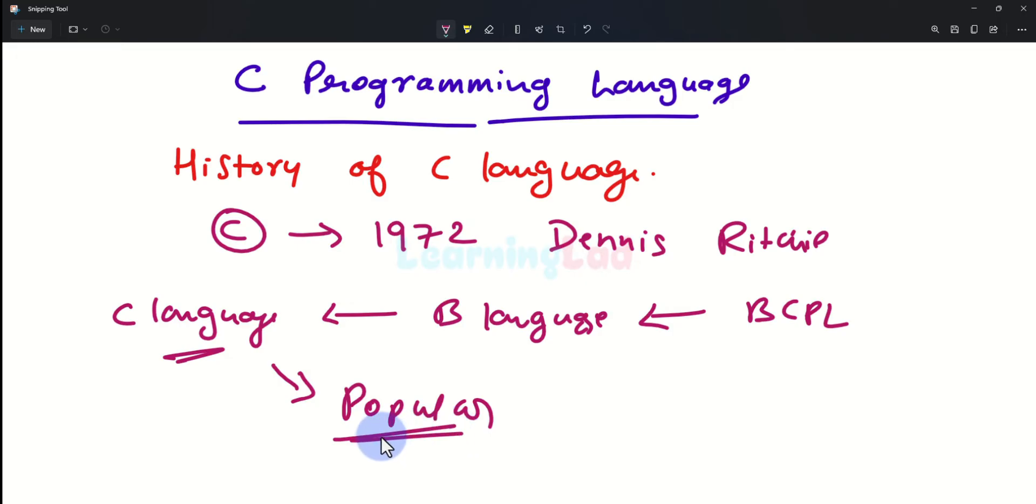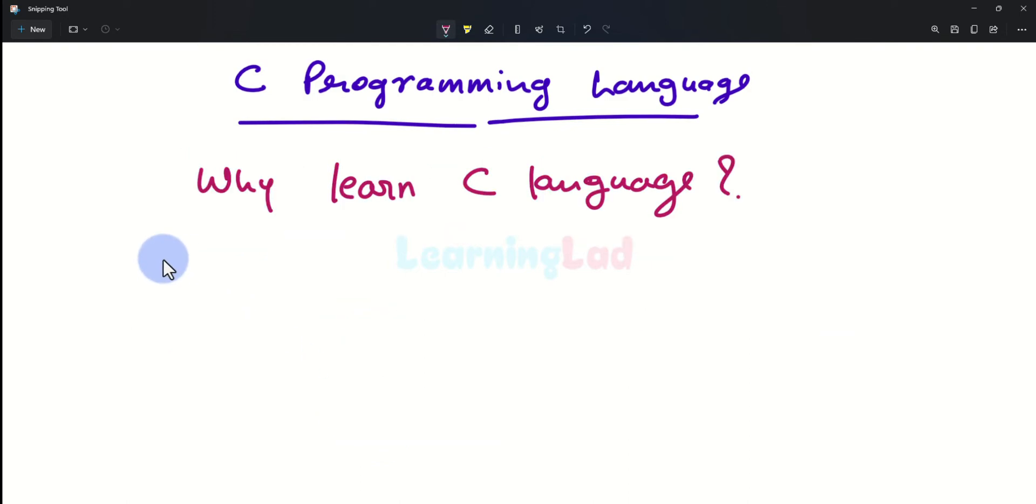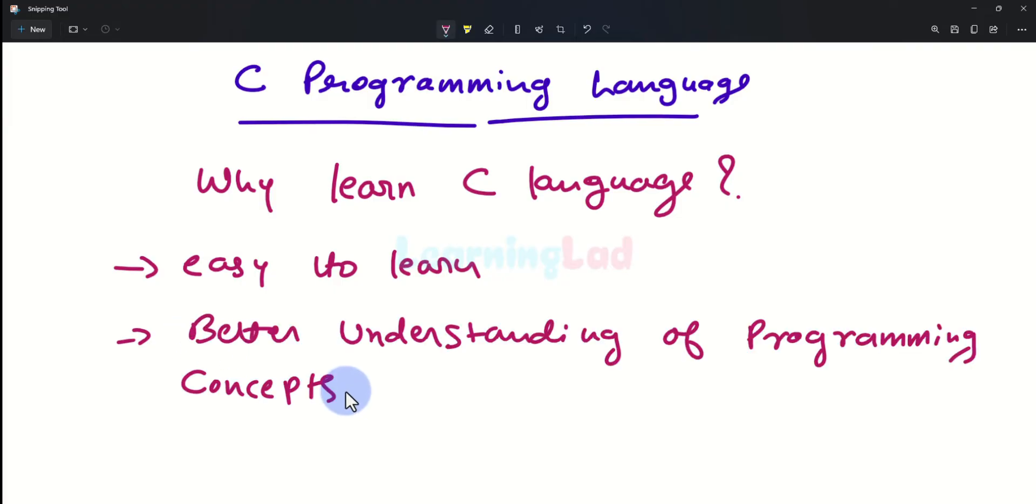And now the question is, why should we learn C programming language when there are so many other languages available? Now in order to learn any programming language, it should be easy to learn. C is one of the easy to learn programming languages. And once you learn the C programming language, you will have better understanding of computer programming concepts.